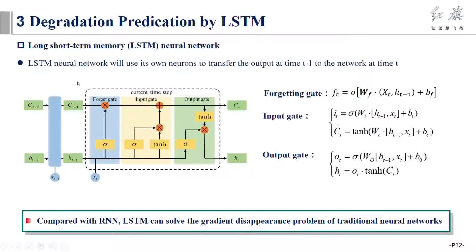In the third part, we used a long short-term memory neural network to predict the degradation of PEM fuel cell. Compared with the traditional recurrent neural network, long short-term memory can prevent gradient explosion or gradient disappearance caused by the increase of training time and network layers.